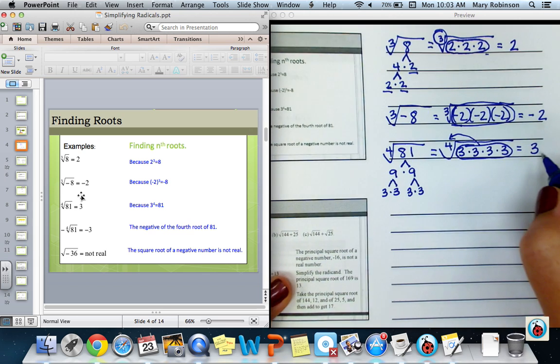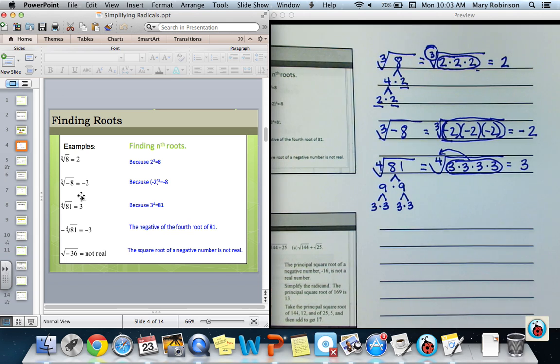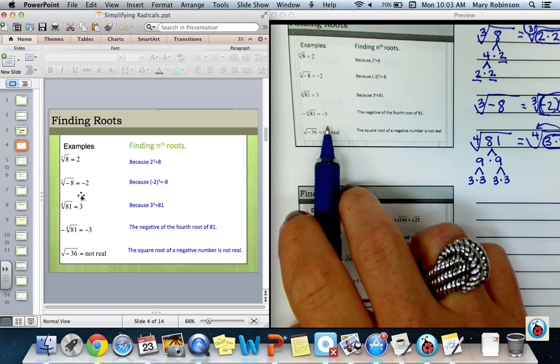I have one group of 3's. Similarly, I have one group of negative 2's and one group of 2's up here. For the next example, negative fourth root of 81, if I have a negative out front, then of course my answer here will also be negative.